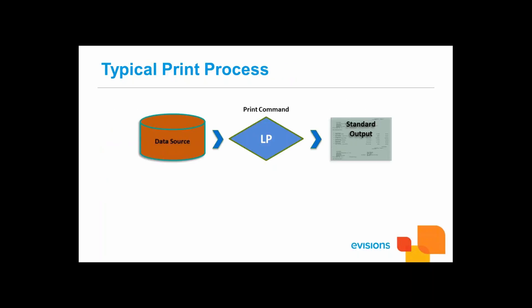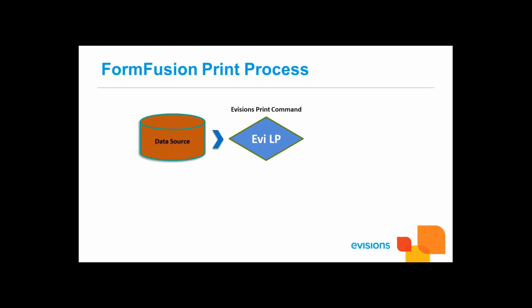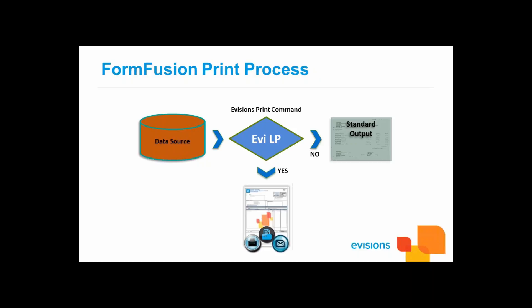Let's look at the process of printing a document. When a typical job is run, the source system creates a file and calls a regular print command known as LP and prints the file. When a FormFusion job is run, the source system creates a file and calls a FormFusion print command known as EVILP, or EvisionsLP. The print command determines if the process called is a regular file or a FormFusion file. If not a FormFusion file, it will print normally. If it is a FormFusion file, it will process the file with the details specified in the FormFusion template.